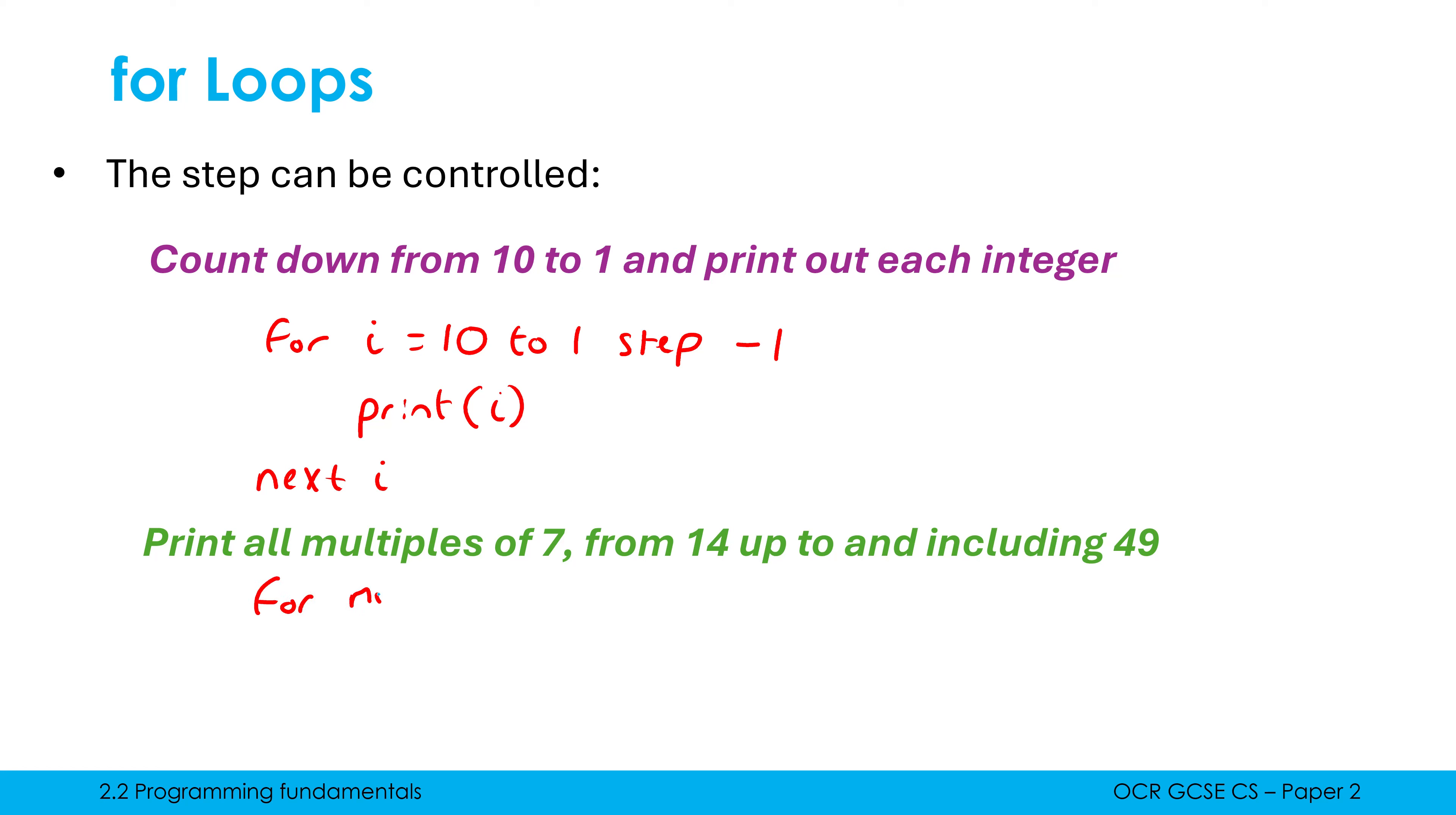Let's call this loop variable multiple, just to add a bit of variety, but i is used by far the majority of times. What's my first value of multiple going to be here? Well, I want it to be 14 initially. I want it to go up to and including 49.